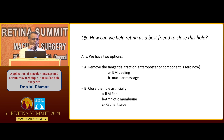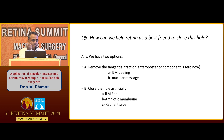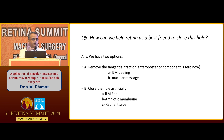How can we help the retina as its best friend? We have two options. First, remove the tangential traction by ILM peeling or macular massage. Second, close the hole artificially by putting an ILM flap, amniotic membrane, retinal tissue, or whatever is available — just close the hole, form an artificial glial sheath, and the hole will close spontaneously.